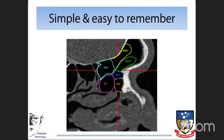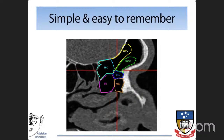So we have a very simple classification, which is easy to remember: agger nasi, supra-agger, supra-agger frontal — the anterior cells. Bulla ethmoidalis, supra-bulla cell, supra-bulla frontal cell — all posteriorly-based cells. Two other cells: superorbital ethmoid and frontal septal cell. We utilize this classification when we plan our surgery in the frontal recess.